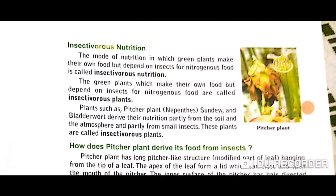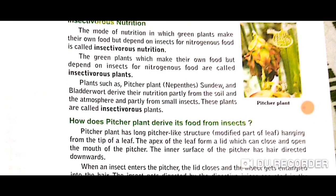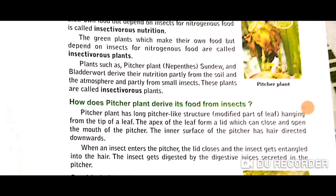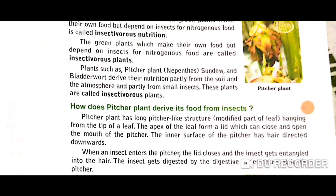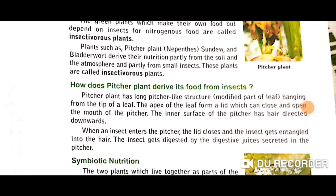The next type is insectivorous nutrition. The mode of nutrition in which green plants make their own food but also depend on insects for nitrogenous food is called insectivorous nutrition. The green plants which make their own food but depend on insects for nitrogenous food are called insectivorous plants. Examples of insectivorous plants are the pitcher plant, sundew, and bladderwort. These plants derive their nutrition partially from soil and atmosphere and partially from small insects.